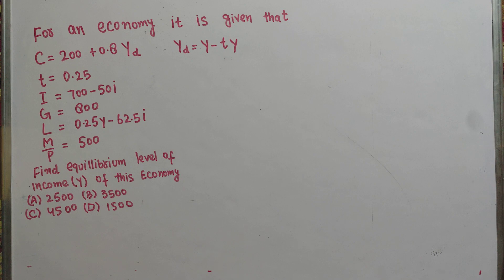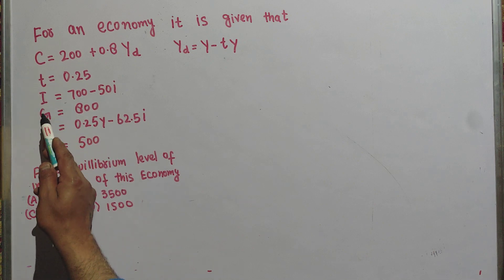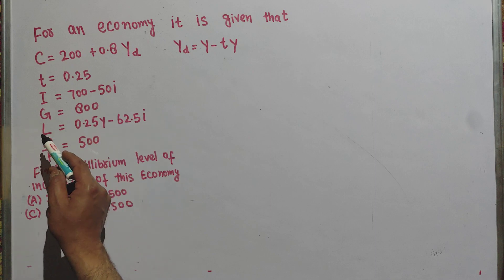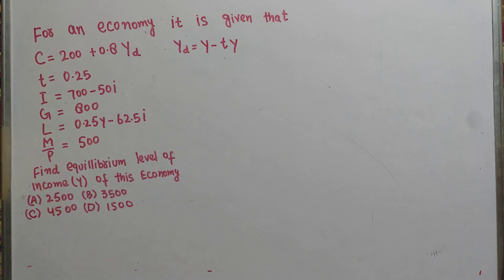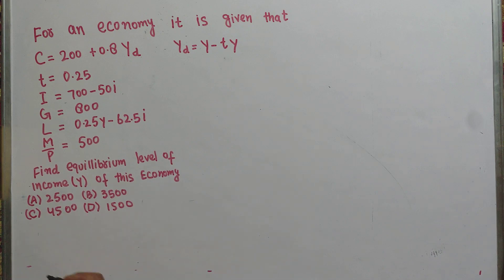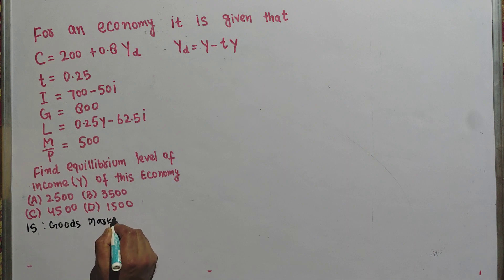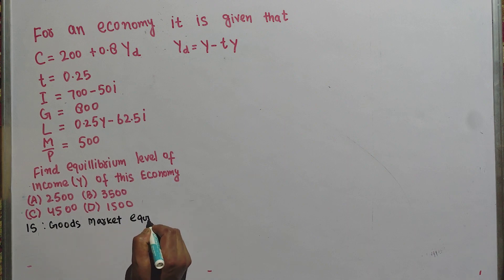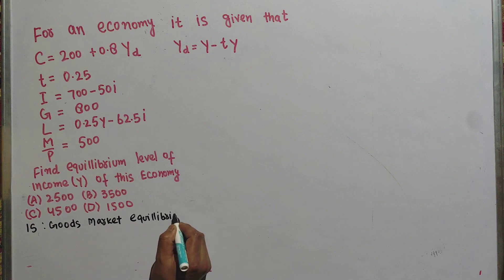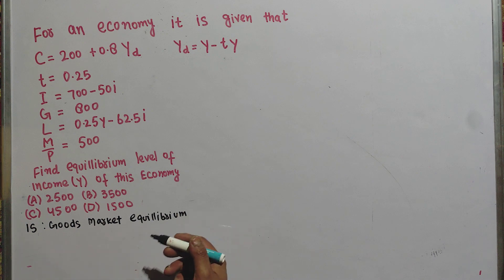We are given the consumption function, marginal tax rate, investment function, government expenditure, demand for money, and supply of money. Since we have both goods market and money market data, we need to find the IS and LM equations first. The IS curve shows us the goods market equilibrium.